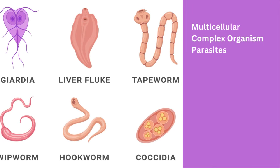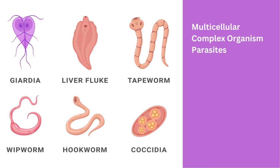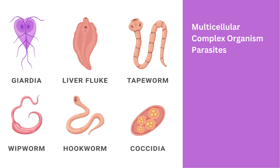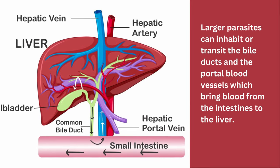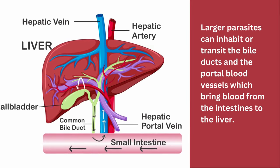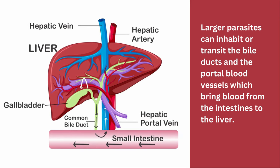Let's start with multicellular complex organism parasites — basically the larger parasites that infect humans. Larger parasites can inhabit or transit the bile ducts and the portal blood vessels which bring blood from the intestines to the liver.